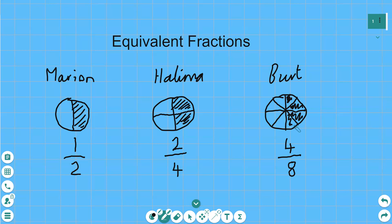And this is what equivalent fractions mean. These fractions showing the amount of pizza they've eaten — they're different fractions, they're not the same fraction, but they represent the same amount of pizza. And that's what equivalent means.